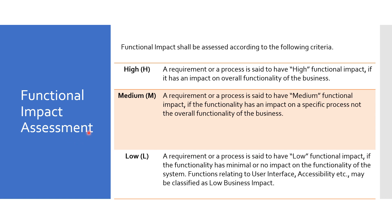Next is functional impact assessment, assessed according to the following criteria. High functional impact: when it has an impact on overall functionality of the business — meaning if any function does not work and due to this the product cannot be released. Medium functional impact: if the functionality has an impact on a specific process, not the overall business, but there is a workaround procedure available. Low functional impact: if the functionality has minimal or no impact on the system — for example, functions related to user interface, accessibility, etc.